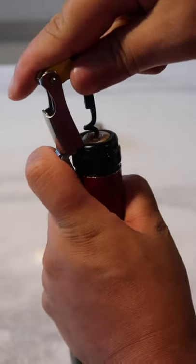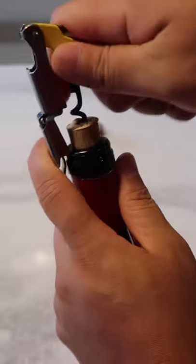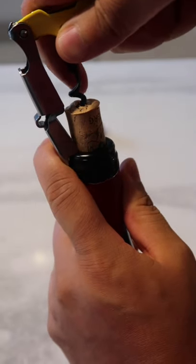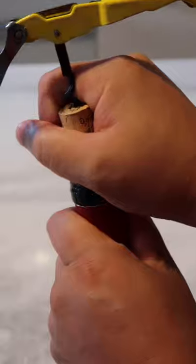Next use the first lever to start pulling out the cork. Move down to the second lever. When the cork is almost out, use your hands to finish off the job.